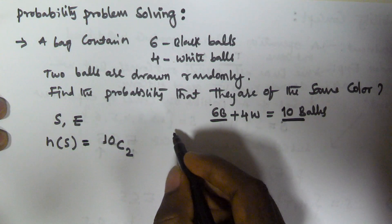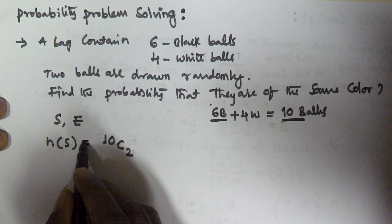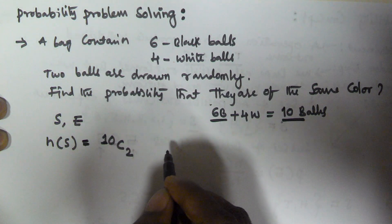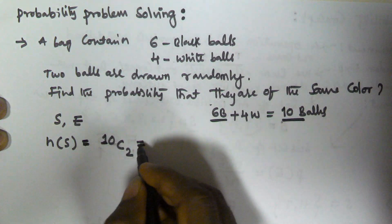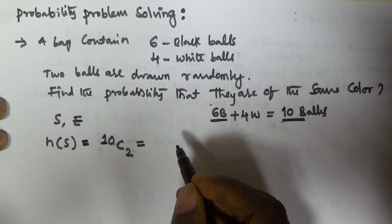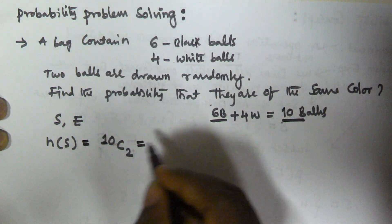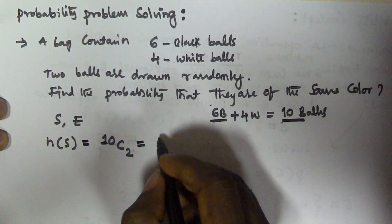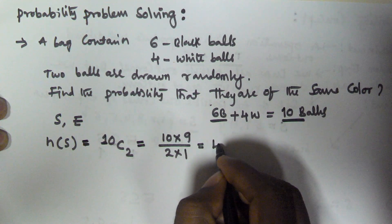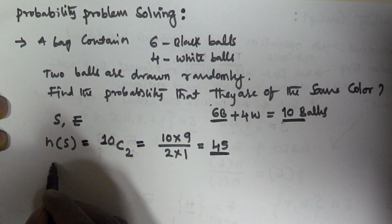Whenever we are selecting we use combinations, and whenever we are arranging we use permutation. Here we are selecting 2 balls out of 10 balls — that is our sample space. 10C2 gives the total number of ways of selecting 2 balls from 10 balls in the bag, and these 2 balls may contain all kinds of possibilities: 2 balls may be black, 2 balls may be white, or 1 is black and 1 is white. So 10C2 = 10×9 / (2×1) = 45. The cardinality of the sample space n(S) = 45.